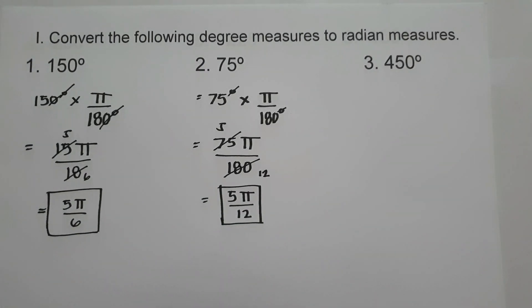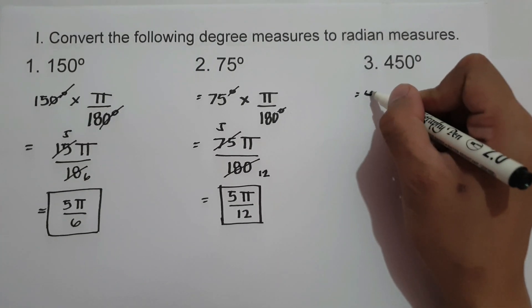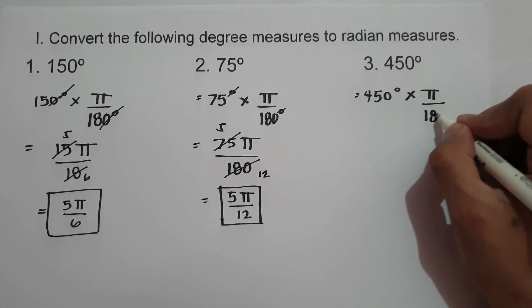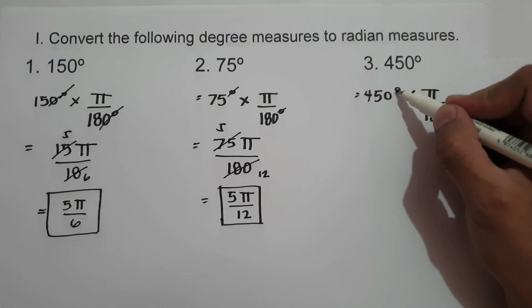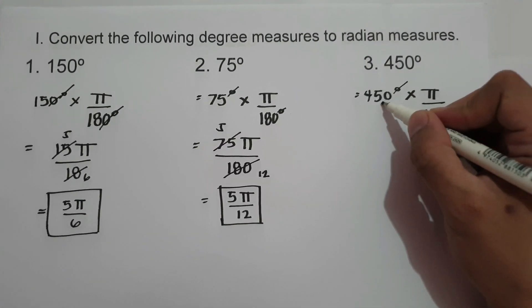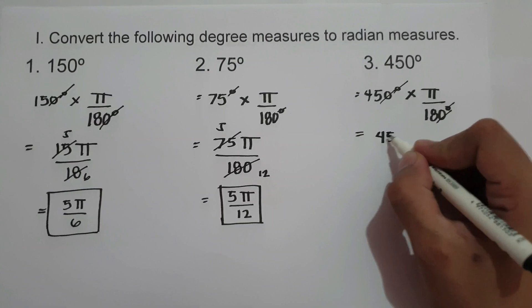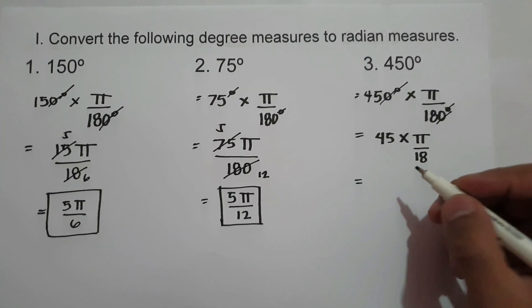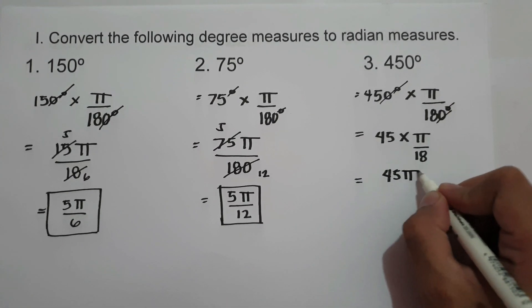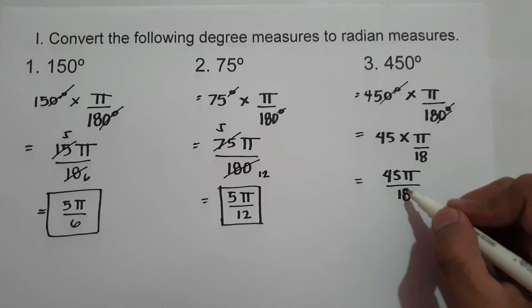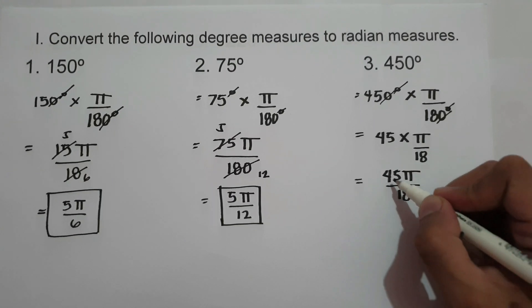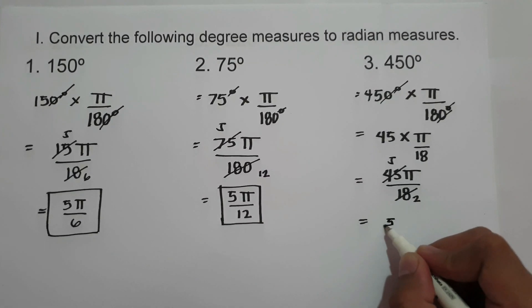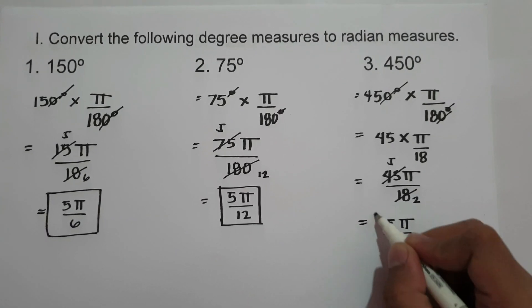On number 3, we have 450 degrees. So 450 degrees times pi over 180 degrees. Cancel the degree symbol and the zero, giving us 45 times pi over 18, which is 45 pi over 18. Since 45 and 18 are divisible by 9, 45 becomes 5 and 18 becomes 2. So the final answer is 5 pi over 2.